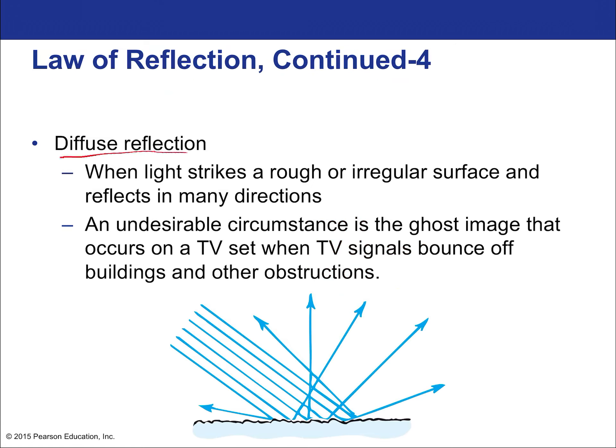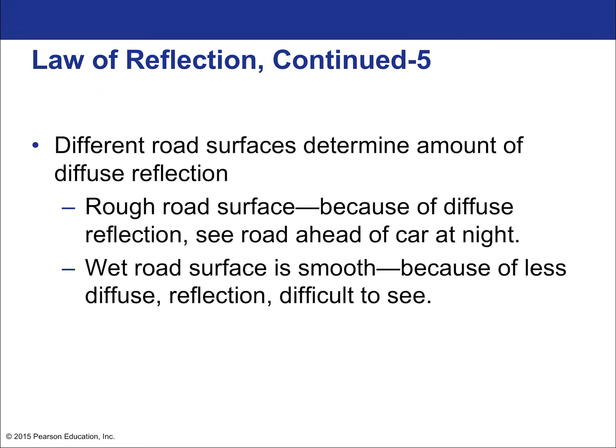Diffuse reflection occurs when there are many different normal directions, as on a wall. You don't get a clear image, but the room is well illuminated. If a room had all mirrors and a single light source, the room would be poorly lit — just multiple reflections of that light source. White walls instead produce diffuse reflection, illuminating the whole room from a single light source.